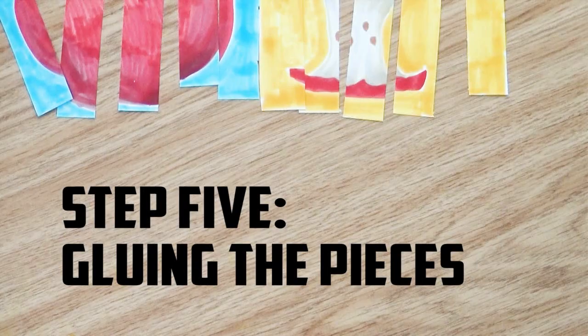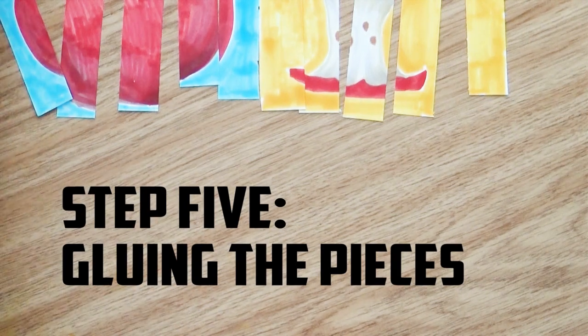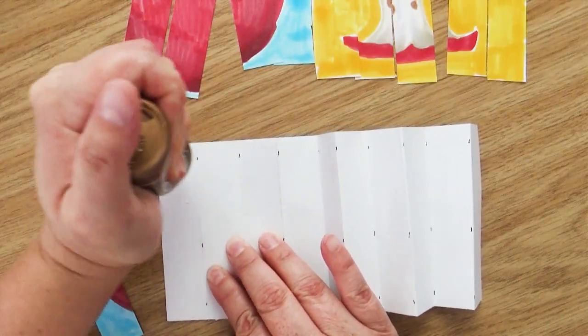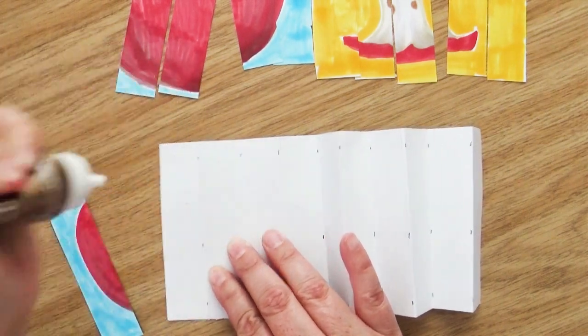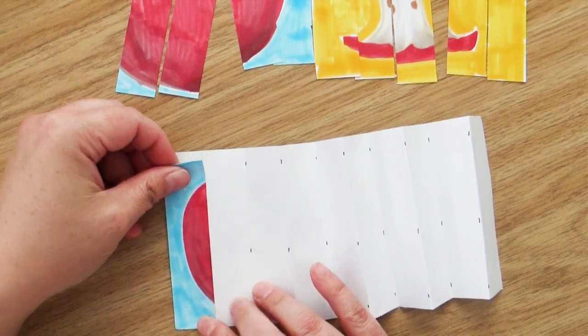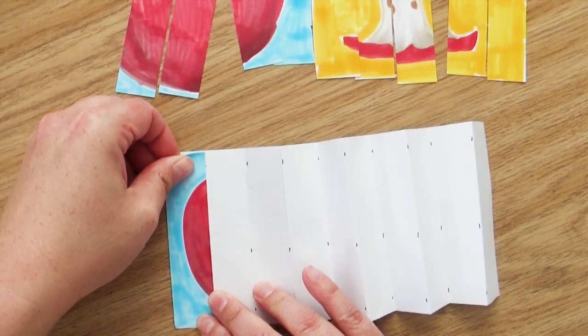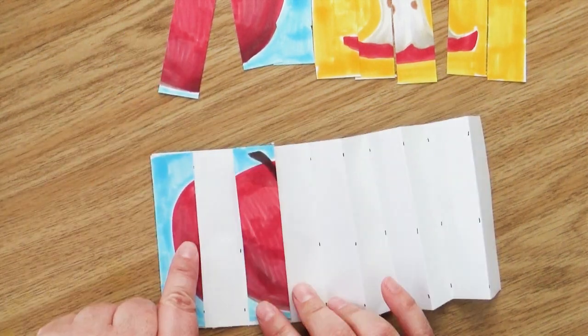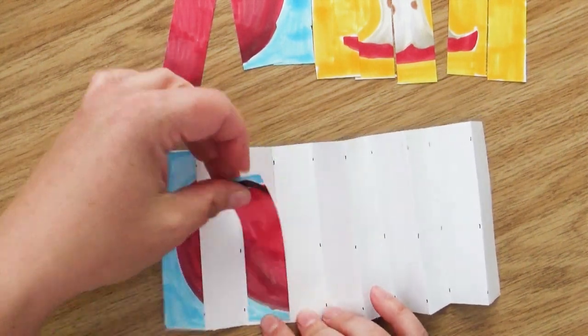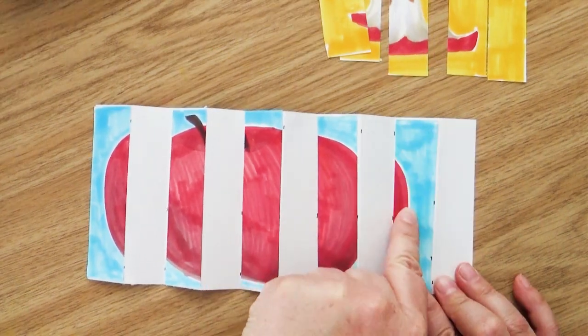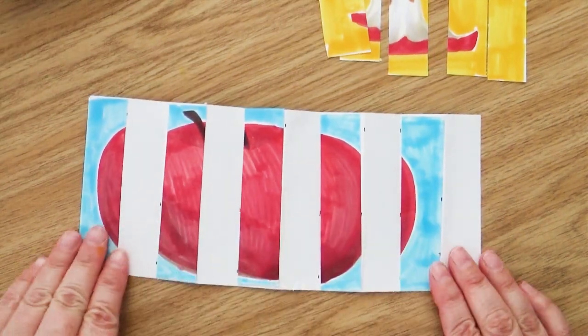Step number five is gluing your pieces. So you're going to need some glue and a tip with gluing paper to paper is a little bit of glue goes a long way. I'm going to glue one apple picture on at a time. Taking the first strip, I'm going to glue that on the first section that we created with our bends. Now you might think to glue the second strip right next to it. Instead, we're going to glue every other spot. When we're done, the picture will look like our apple is really stretched out and behind bars.